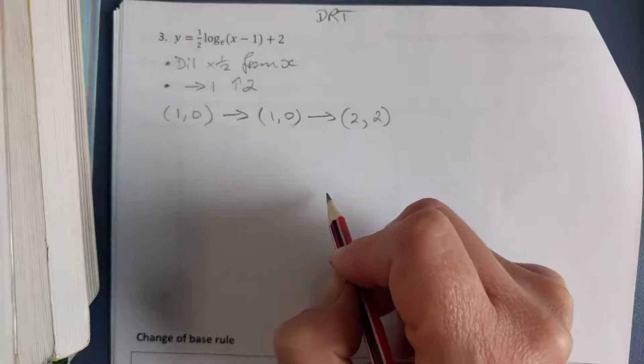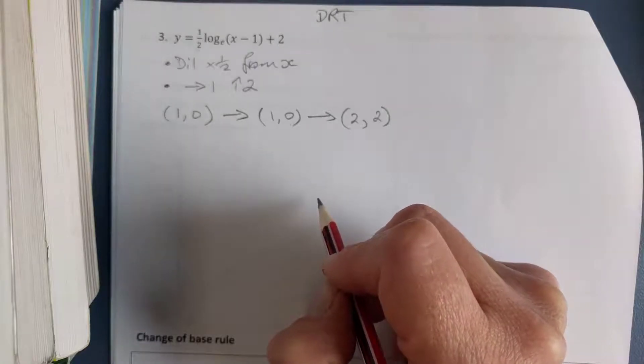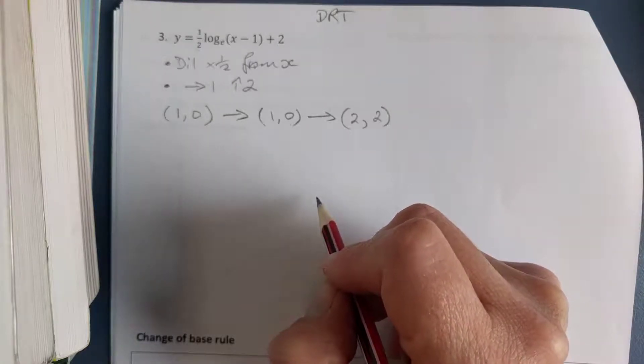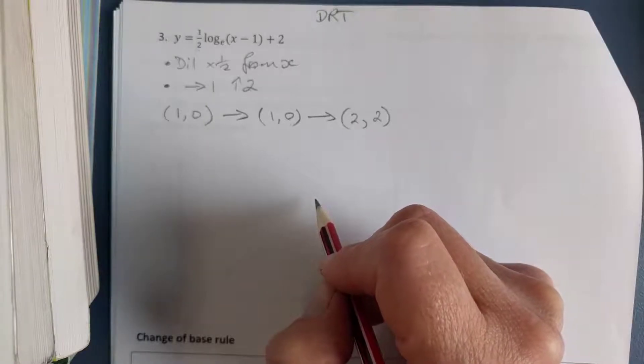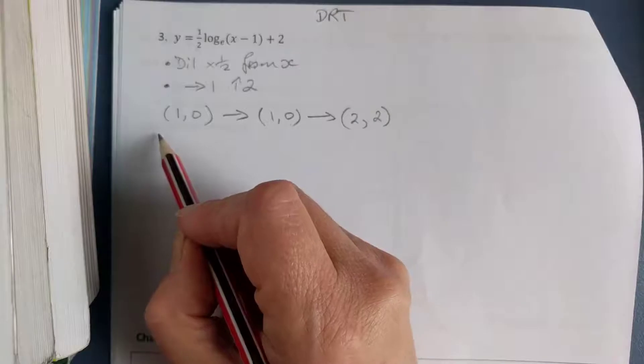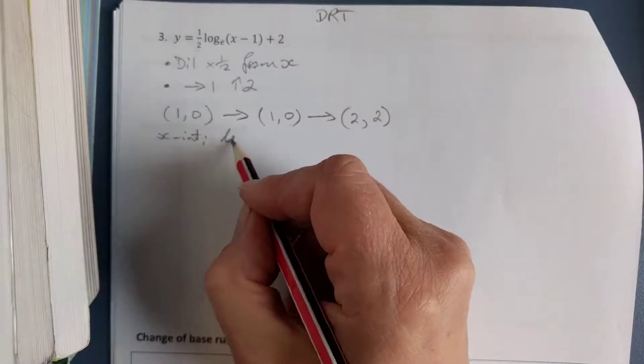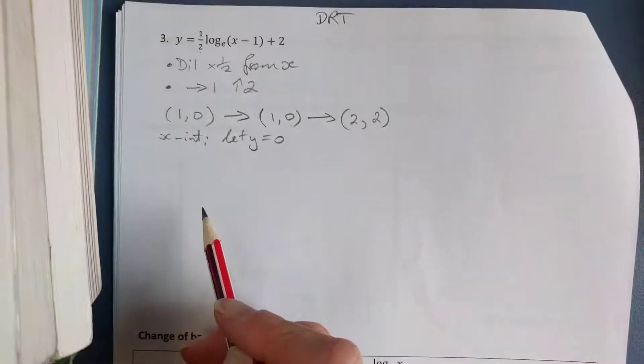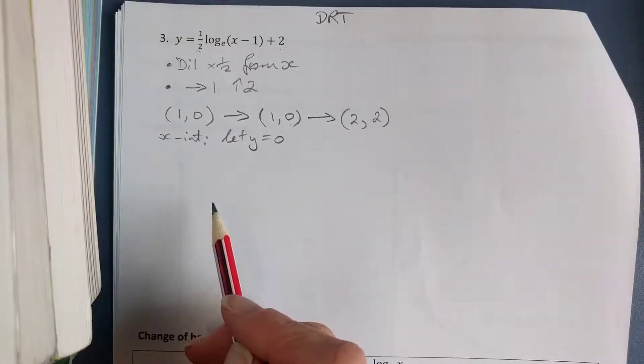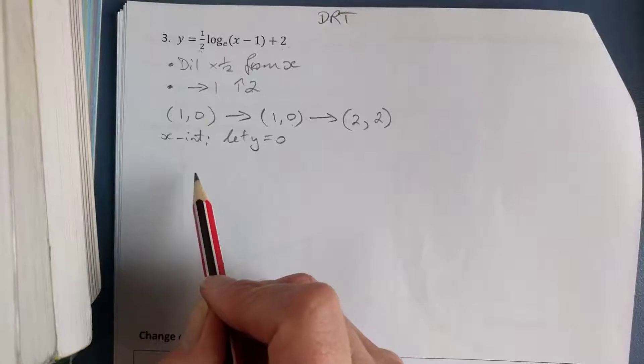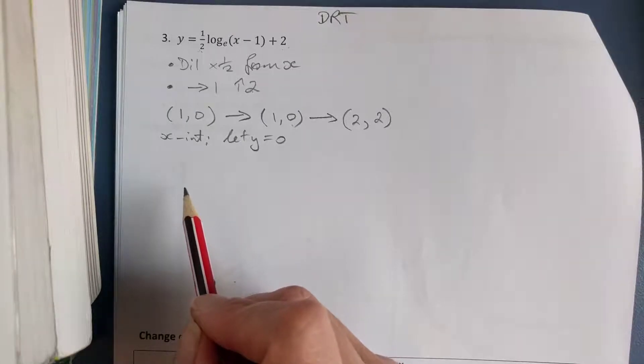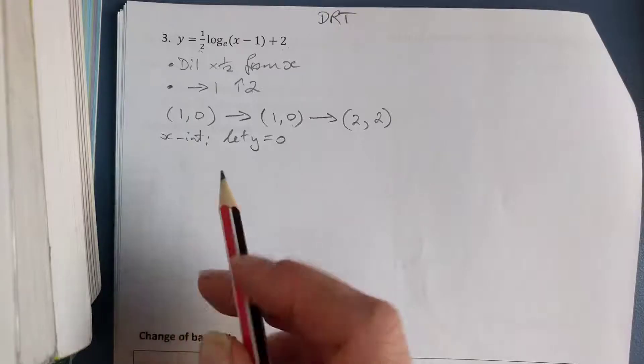Now my other key point here would be e, 1, but I'm not going to do the dilation of that because I think I'm going to end up with an intercept, so I'm going to find that instead. So my x-intercept I'm going to find by letting y equal 0.